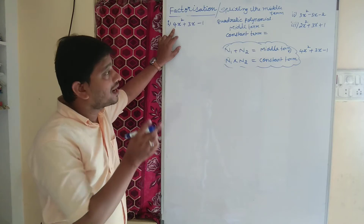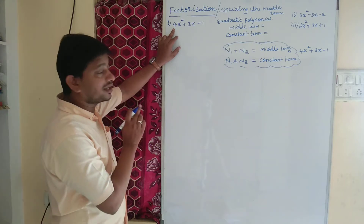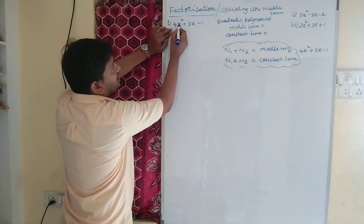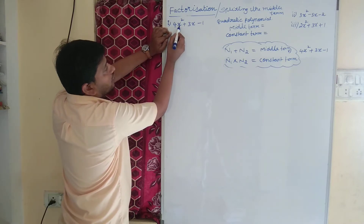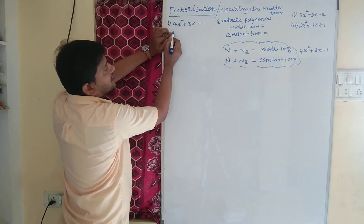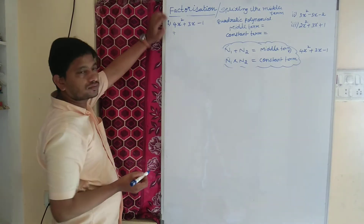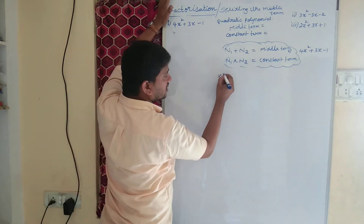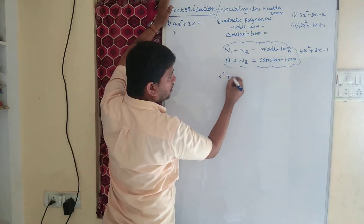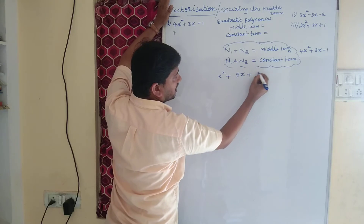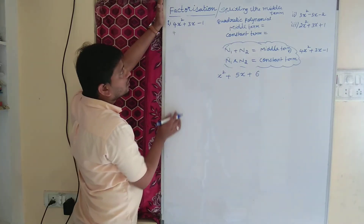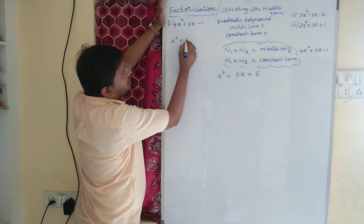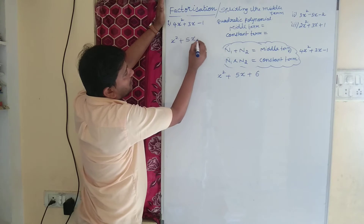Now this is another case — students, listen carefully. Here the coefficient of x square is 4. In our previous video we discussed the problem x square plus 5x plus 6. Try to observe the difference between these two polynomials.